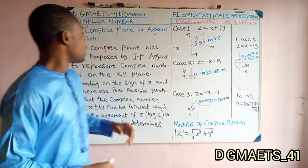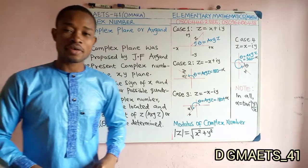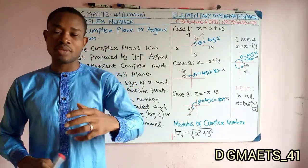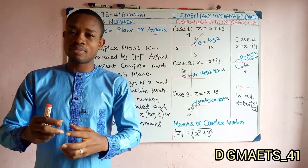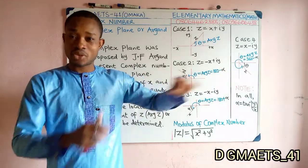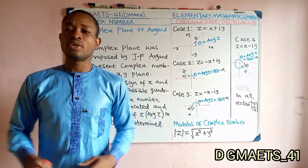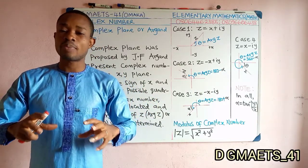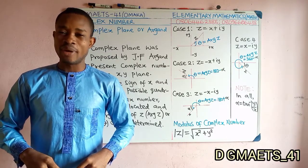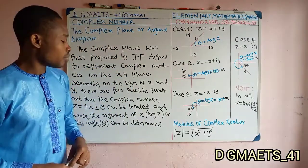In this video, we want to look at the complex plane, also known as the Argand diagram. This is a plane proposed by Jean-Robert Argand in an attempt to represent a complex number on a plane. Just like you can represent a real number on a straight line — a real number line, horizontal — in a similar way for complex numbers, we can show them on a diagram, known as the Argand diagram, or simply the complex number plane.